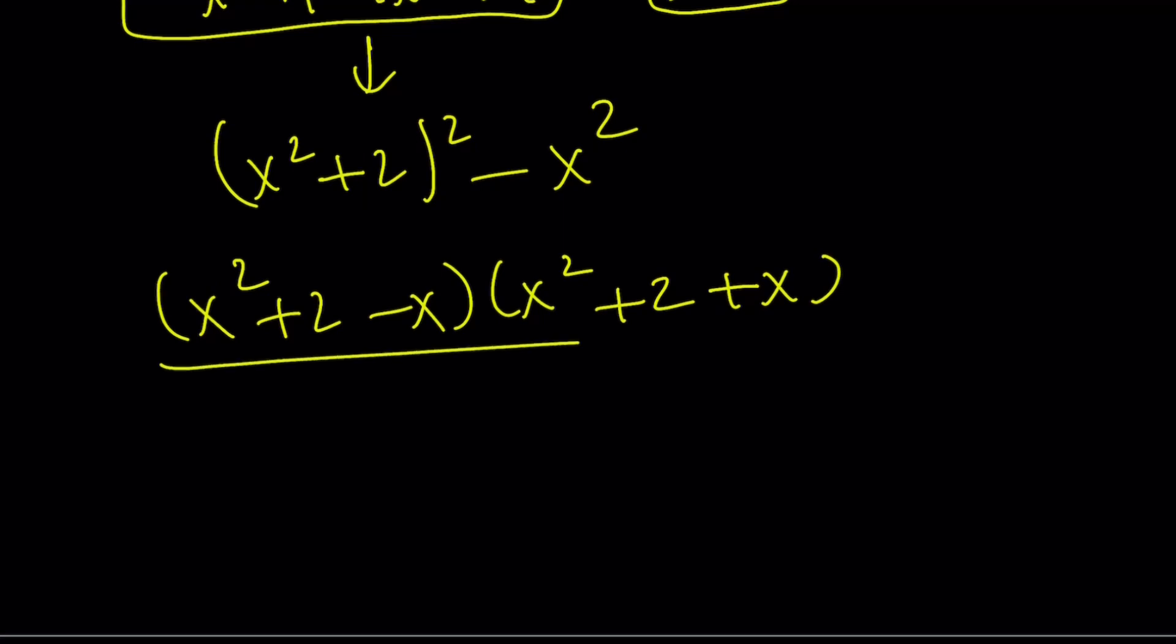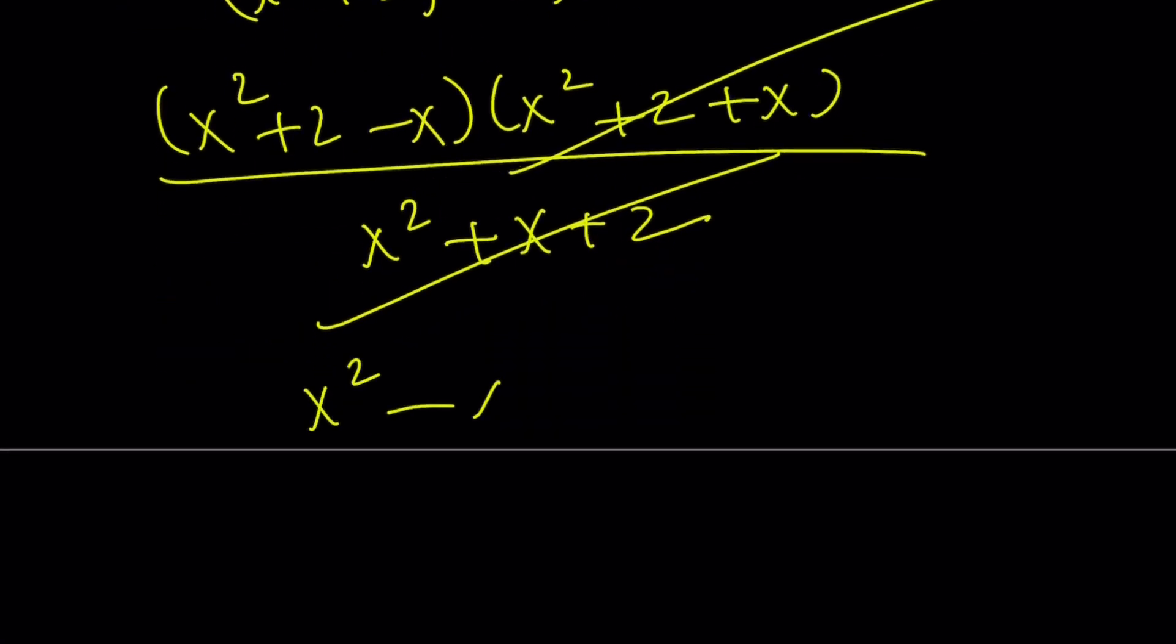But this was the numerator, remember? And the denominator was x squared plus x plus 2. These two are the same. They cancel out. Leaving us with the answer x squared minus x plus 2.